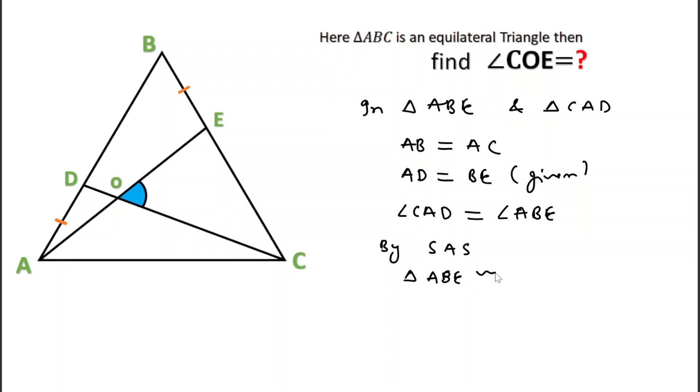ABE is congruent to triangle CAD. And from this congruence we can say that angle BAE will be equal to angle ACD, since these two triangles are congruent.